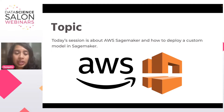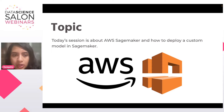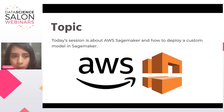Today's session is about AWS SageMaker and how to deploy a custom model in SageMaker. AWS is a cloud provider, and we are going to learn how you can deploy any machine learning model which is custom — one you've made customized for your particular needs. That means you've taken an algorithm and maybe tweaked it to suit your use case. So how would you deploy it for any end user to consume your model? This is the topic for today.